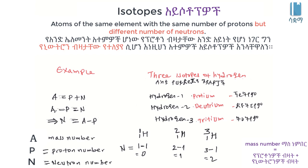Isotopes of an element share the same element identity. At least we get one element with different isotopes. We call them isotopes. We identify them by their atomic number, proton count, neutron count, mass number, and we calculate atomic mass from these values.